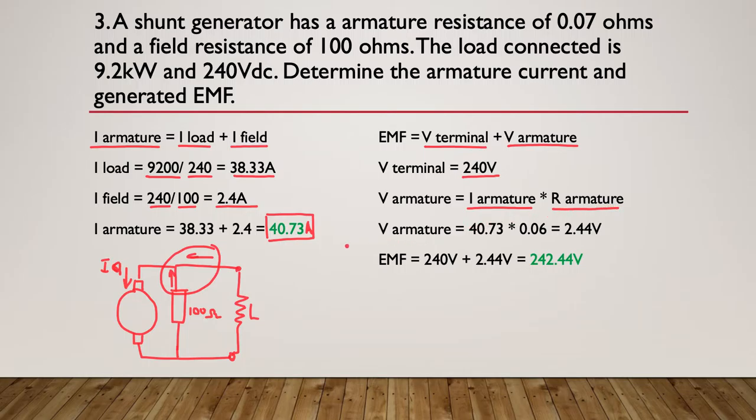We know that the current through the armature is 40.73. There it is there. Multiply by the resistance, which we were told in the question. Multiply by 0.06, equals 2.44 volts. So we just simply add the 240 volts to the 2.44, giving us a total answer of 242.44 volts.